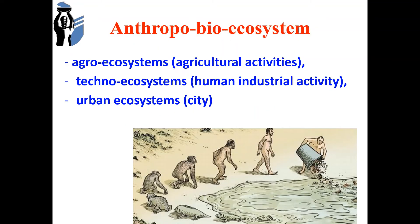There is the anthropo-bio-ecosystem, which is divided into agro-ecosystems (agricultural activities), techno-ecosystems (human industrial activity), and urban ecosystems (cities). At the present stage, people are forced to change natural ecosystems and then destroy them in order to meet their ever-increasing needs as technology advances.